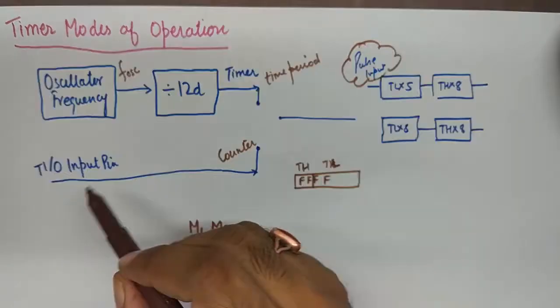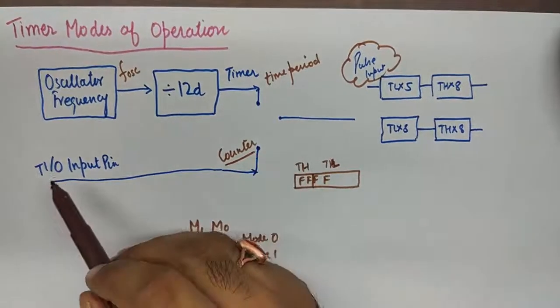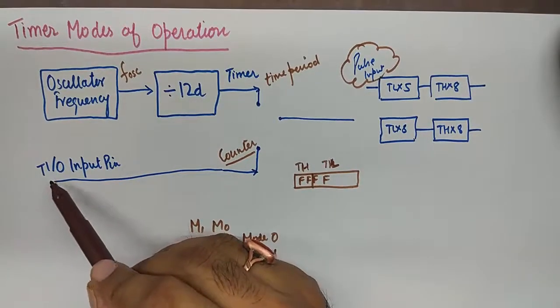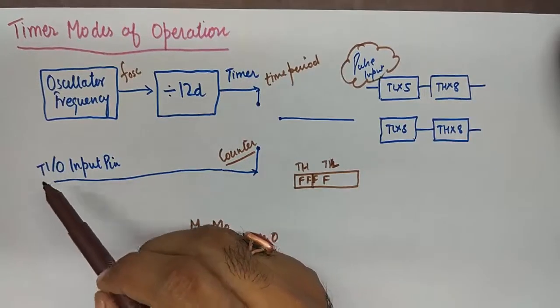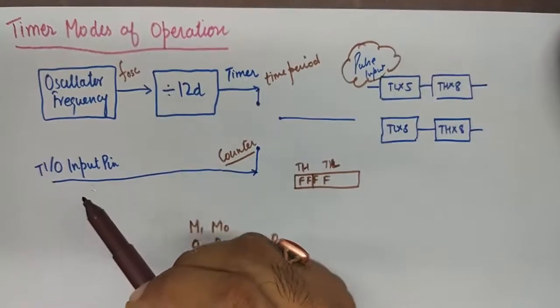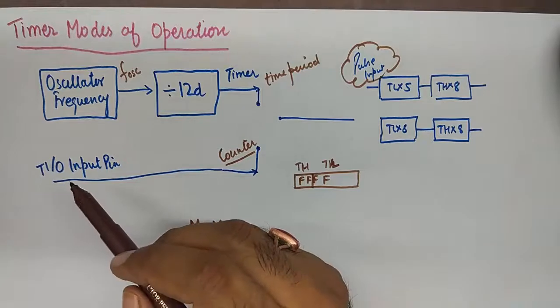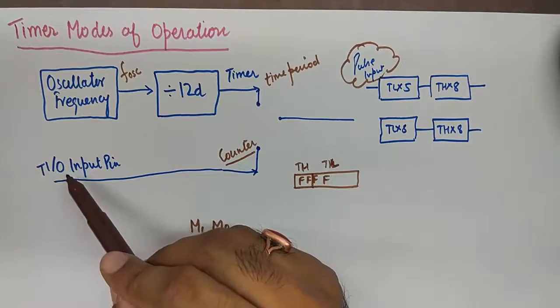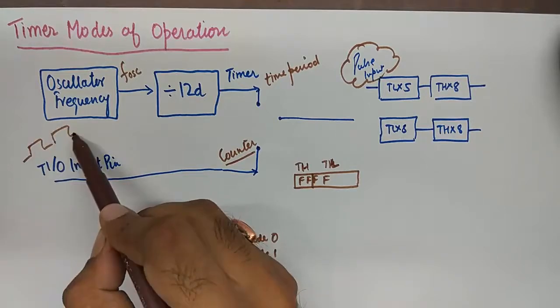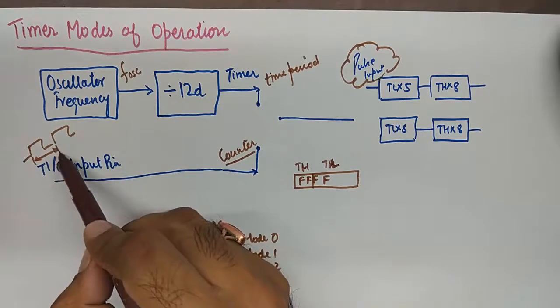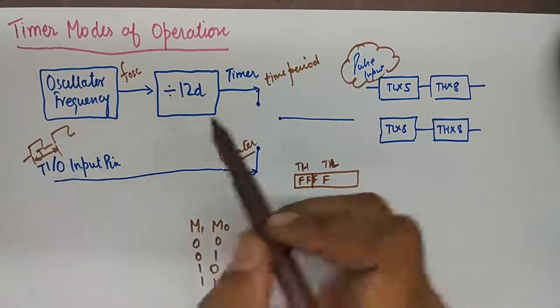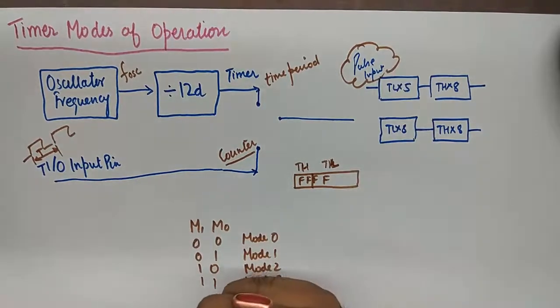On the other hand, if you wish to use it as a counter, you will find two pins for timer 1 and timer 0 on the IC. And whatever clock frequency you apply there, the time period is calculated from that, and that time is applied to the pulse input.